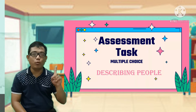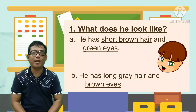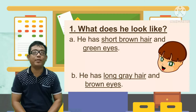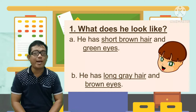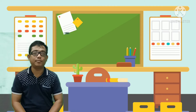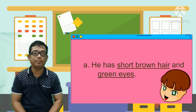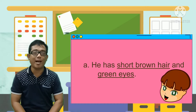Number 1. What does he look like? A. He has short brown hair and green eyes. Letter B. He has long gray hair and brown eyes. The correct answer is Letter A. He has short brown hair and green eyes.